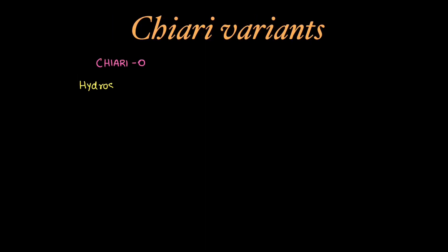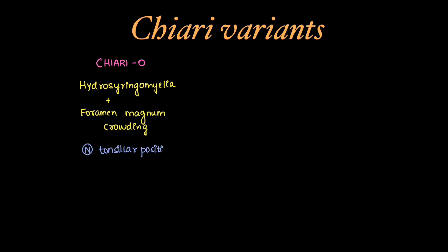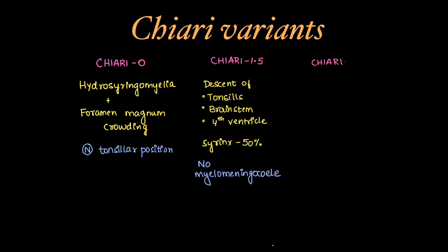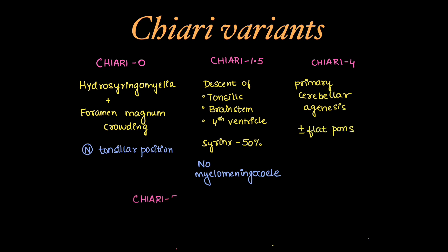In brief, Chiari 0 is hydrosyringomyelia plus foramen magnum crowding with normal position of tonsils. In Chiari 1.5 malformation, we can see descent of the tonsils, brainstem, and fourth ventricle causing crowding of the foramen magnum, associated with syrinx formation in 50% of cases, but no myelomeningocele. In Chiari 4 malformation, there will be primary cerebellar agenesis with or without a flat pons. Chiari 5 malformation includes Chiari 2 plus occipital or high cervical myelomeningocele.